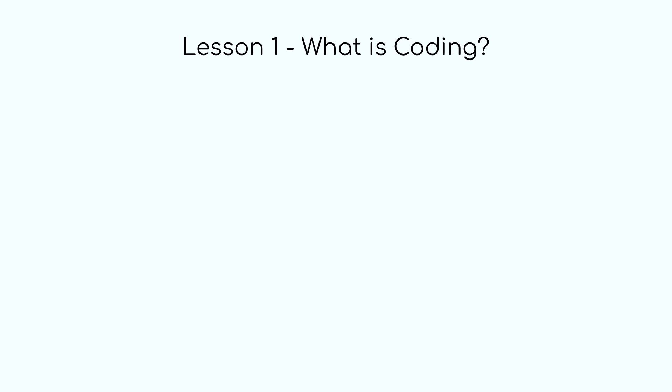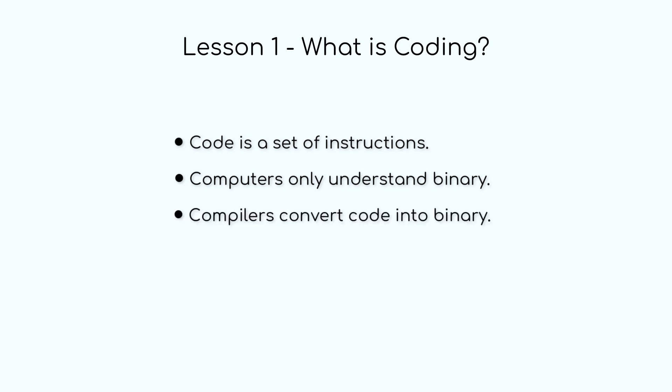So let's recap what we learned. Code is a set of instructions that tell a computer what to do. Computers only understand binary. Compilers are tools that translate code into machine readable instructions, binary, which the computer can execute. Binary signals form the foundation of everything you see and hear on your computer. At the most basic level, they are simply electrical pulses that switch on and off representing these ones and zeros of digital data.